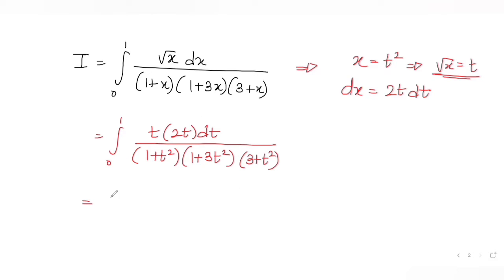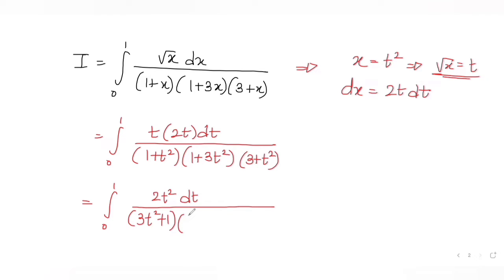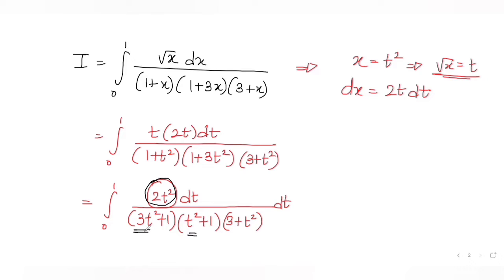So I have limits 0 to 1 with 2t² dt in the numerator and denominator expressions (3t²+1), (t²+1), and (3+t²). To manipulate 2t² in terms of the denominator expressions: since 3t² minus t² = 2t², I can write 2t² as 3t² − t².